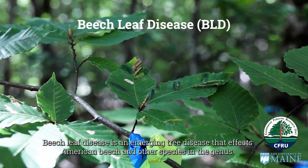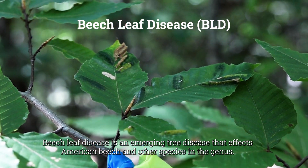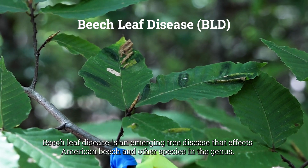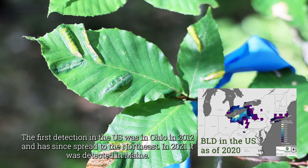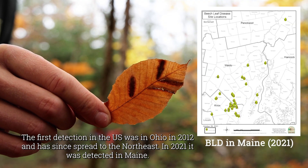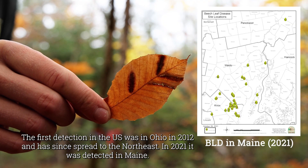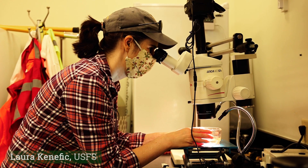Beech leaf disease is an emerging tree disease that affects American beech and other species in the genus. The first detection in the U.S. was in Ohio in 2012 and has since spread to the Northeast. In 2021, it was detected in Maine.